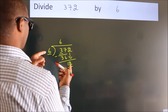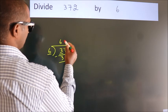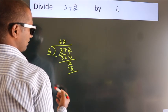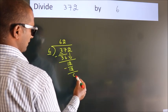When do we get 12? In the 6 table: 6 twos, 12. Now we subtract. We get 0.